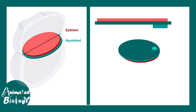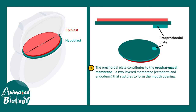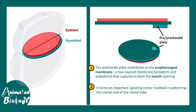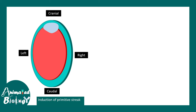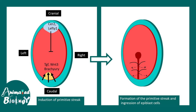An important structure at the cranial end is the prechordal plate, which eventually gives rise to the oropharyngeal membrane, which ruptures to form the mouth — defining the cranial end. The prechordal plate also provides inductive signals for CNS formation and neural tube closure. Induction of the primitive streak is mediated by several signaling molecules, including TGF-beta, Wnt, Brachyury, and the opposing gradient of Cerberus and Lefty. These define primitive groove and primitive streak formation and ultimately induce ingression movement of the epiblast cells.